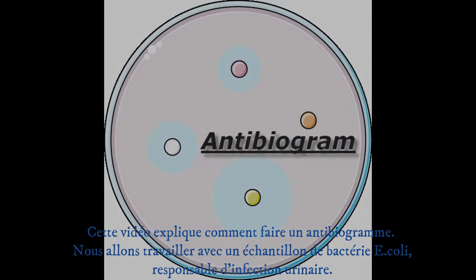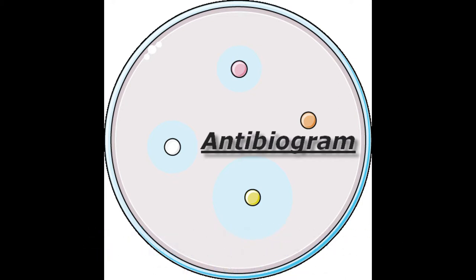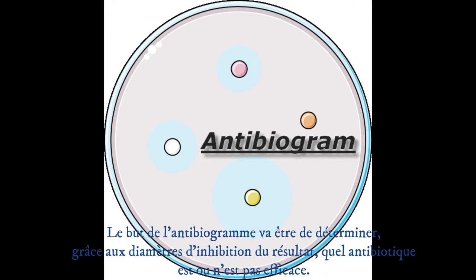This video is about how to do an antibiogram. We're going to work with a sample of bacteria responsible for urinary tract infection. The purpose of the antibiogram will be to determine, thanks to the zone of inhibition of the result, whether the antibiotics are or are not effective.